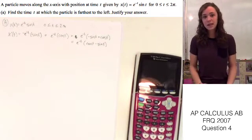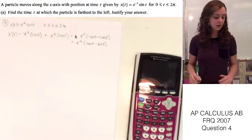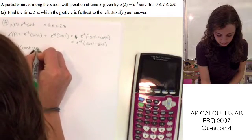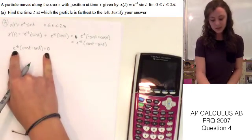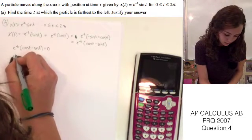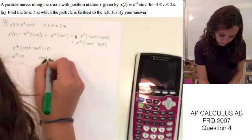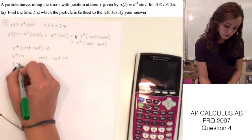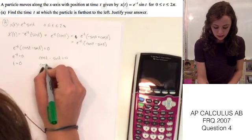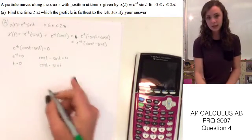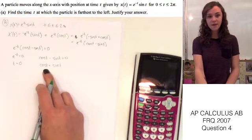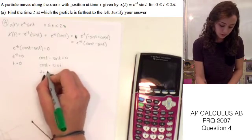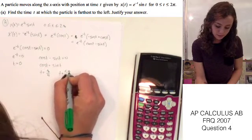Now that we know the derivative function, we're going to set that equal to 0, because we need to find the critical numbers to plug back in to find the absolute minimum. So e to the negative t times cosine t minus sine t equals 0. We know that e to the negative t cannot equal 0, so we set cosine t equal to sine t by adding sine t to both sides. Using the unit circle, we find those values are when t equals pi over 4, or when t equals 5 pi over 4.